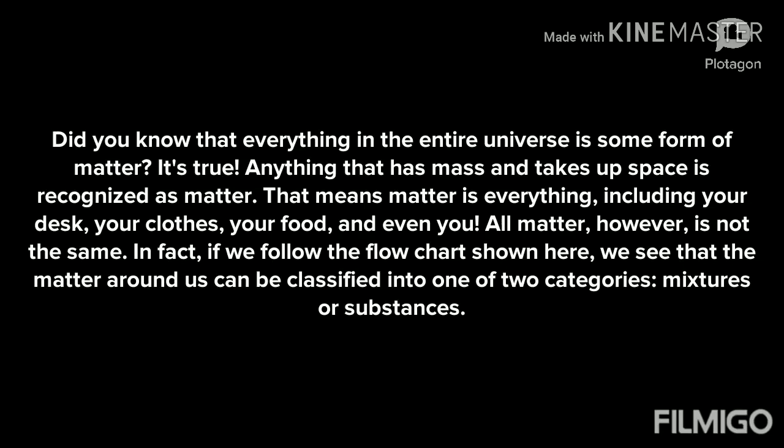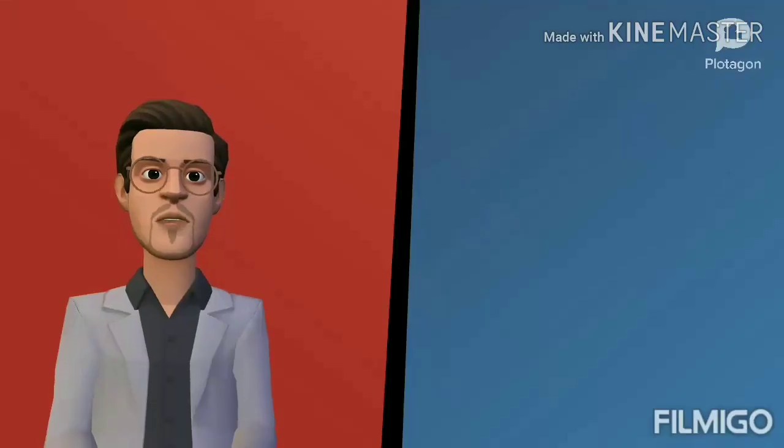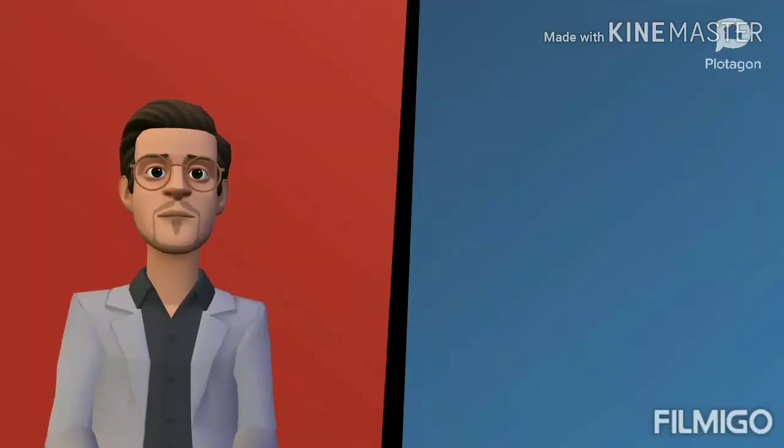All matter, however, is not the same. If we follow the flowchart shown here, we see that the matter around us can be classified into one of two categories: mixtures or substances. In the world of physical science, a substance is simply a pure form of matter — matter that contains only one type of atom or molecule. A mixture, meanwhile, contains a combination of different atoms or molecules and is therefore said to be impure.